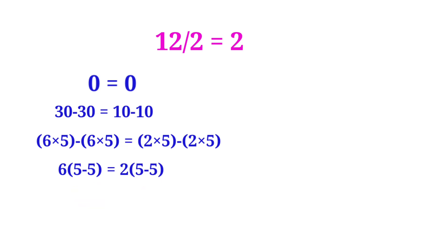Now see here 5-5 and 5-5 both sides are common. So we can cancel the same terms. Then 5-5 and 5-5 are cancelled. Now the remaining is 6 is equal to 2.